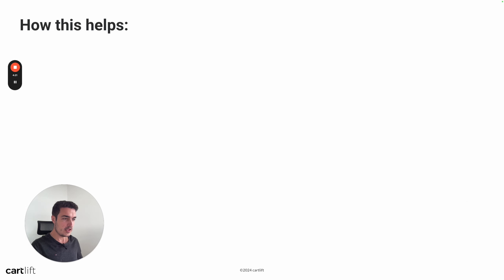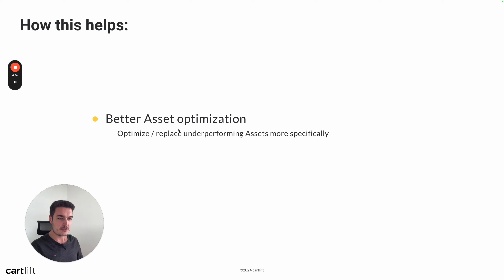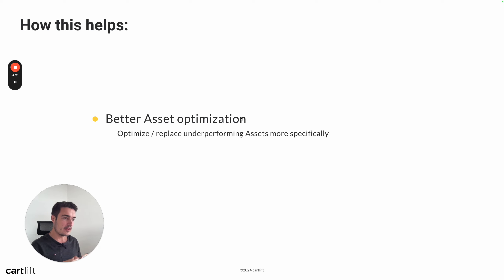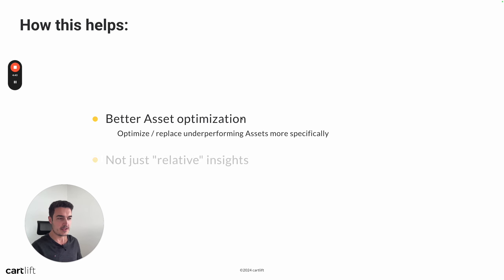So how this helps is, first of all, with better asset optimization. You can specifically optimize or replace underperforming assets more precisely. Previously we had this good, best, and poor indication, which helps. But now it's a lot more specific — you have actual numbers and actual data, which is always better than just a rough indication.